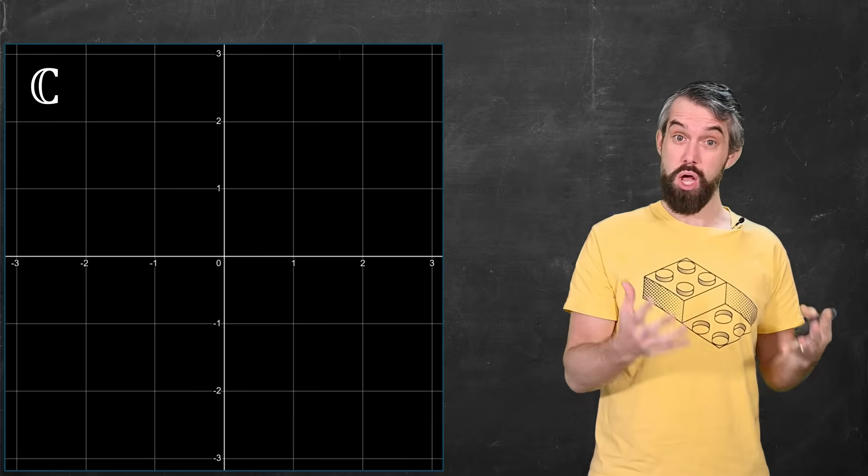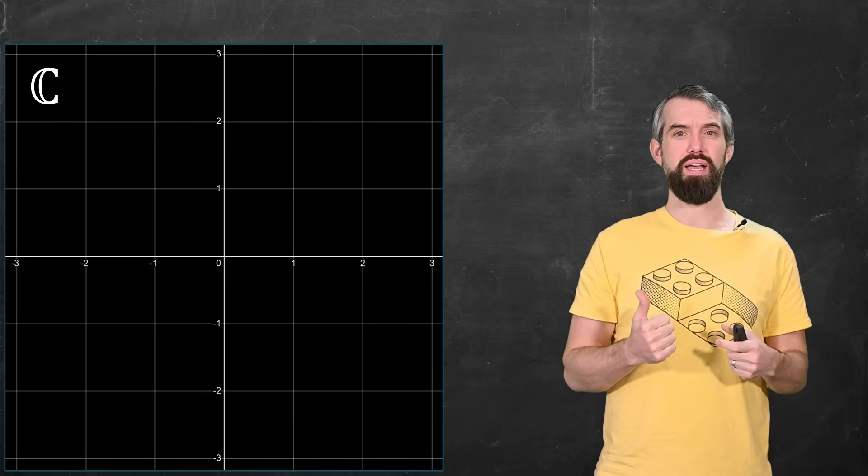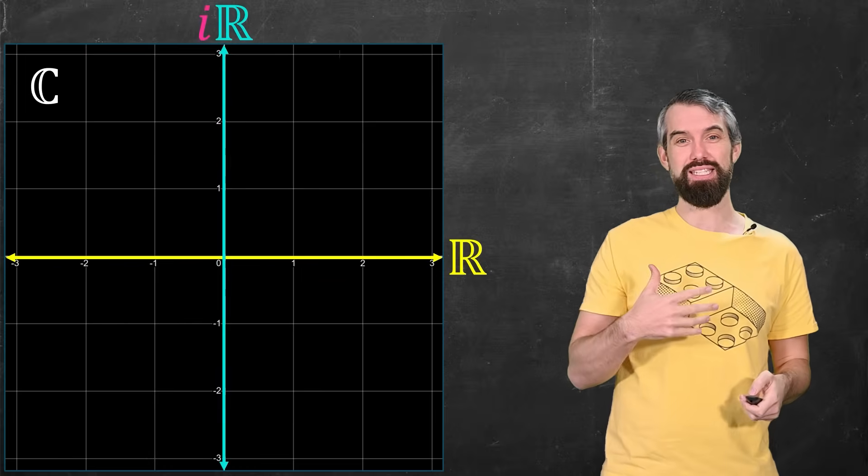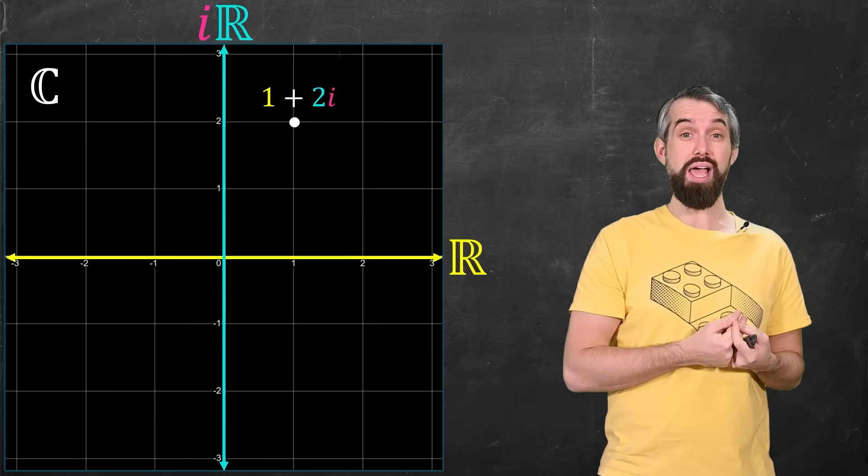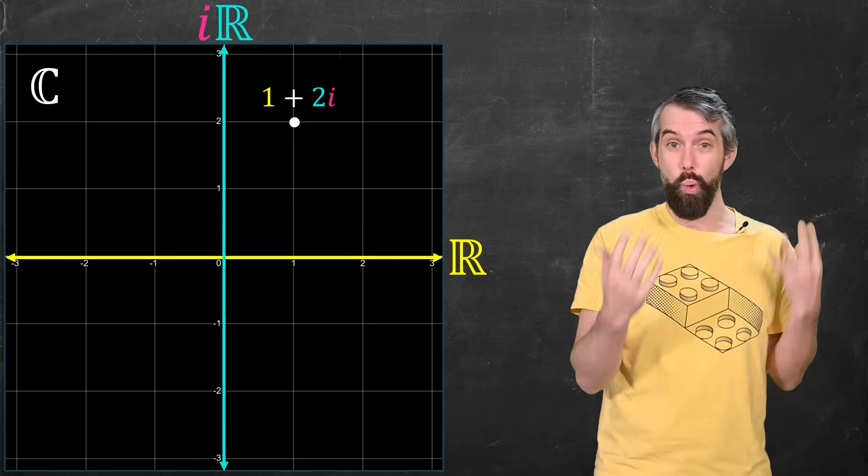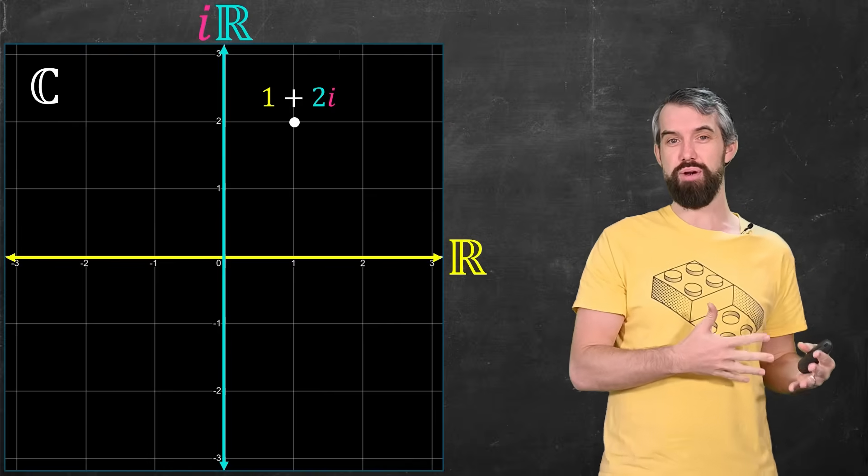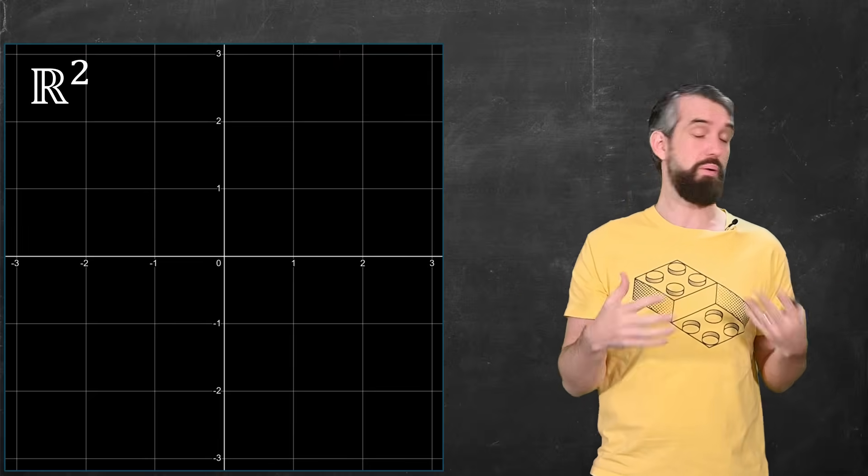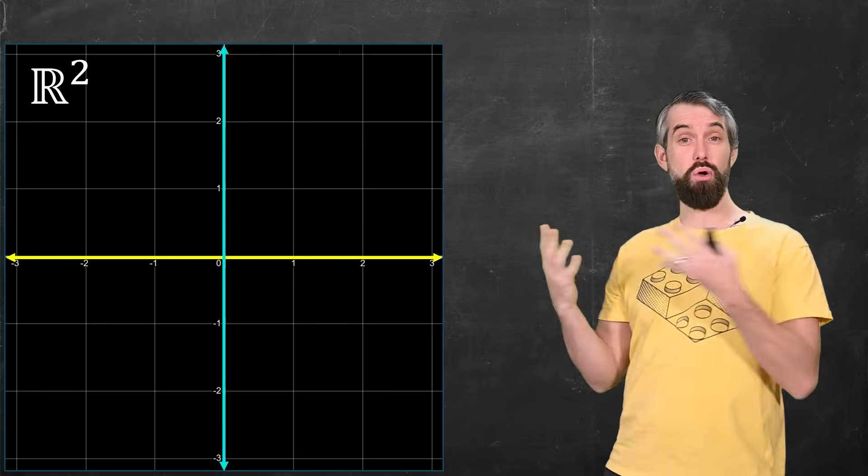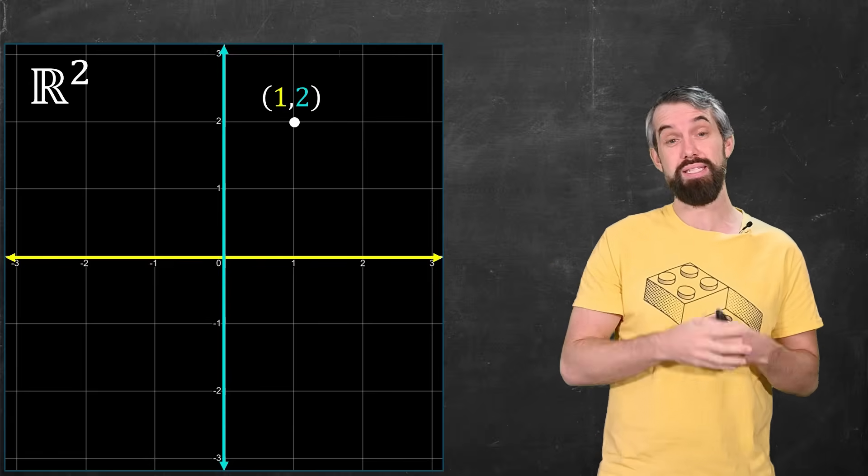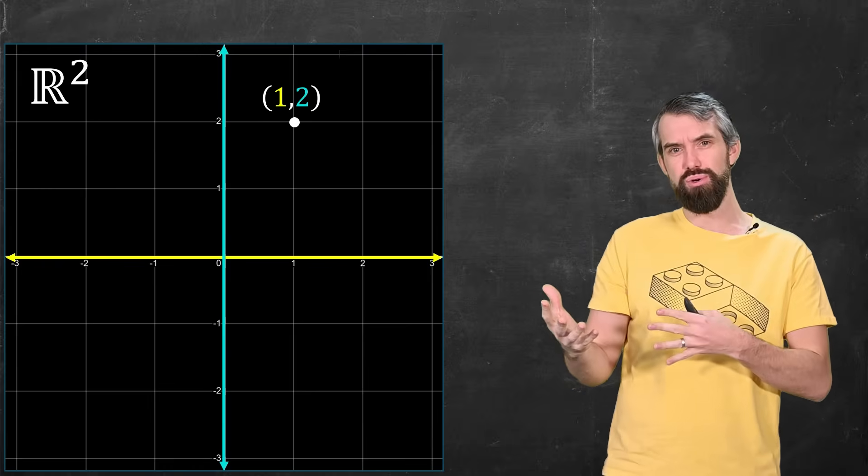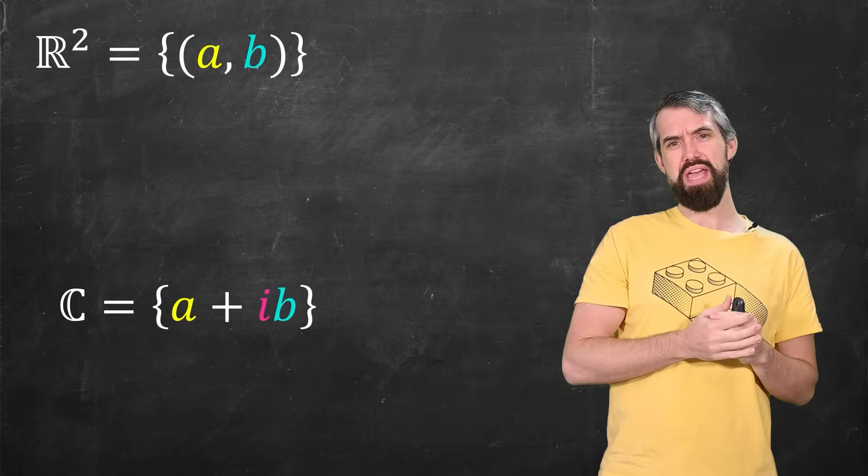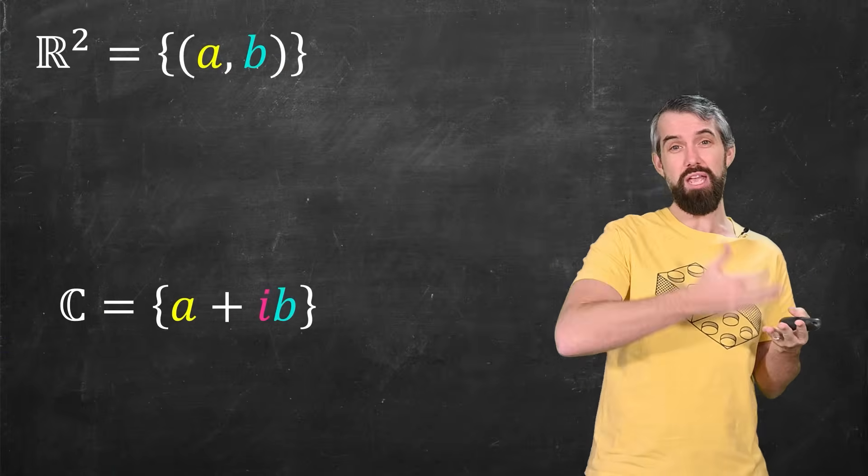And I can visualize complex numbers on what's called the complex plane. The idea is you have a real axis, and then you also have an imaginary axis. So if I put on the screen a point like 1 plus 2i, this is just an instruction that says, go 1 along the real axis, and go 2 along the imaginary axis.